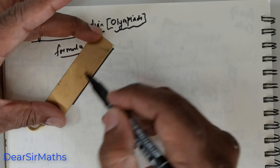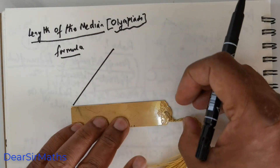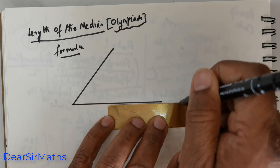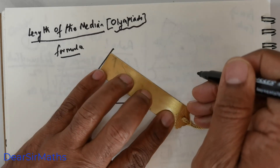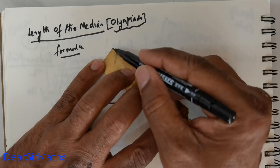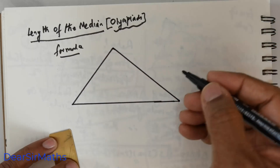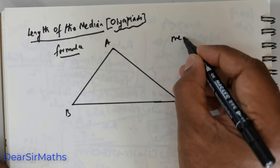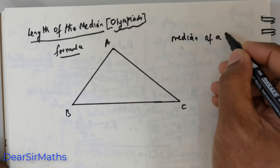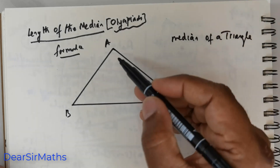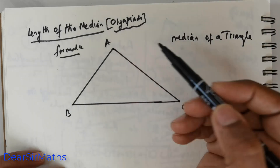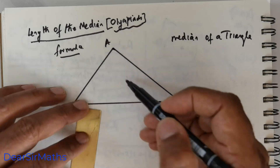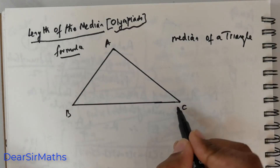So first let me draw the triangle. You have a triangle that is being drawn here. And then after this, let me name the sides as A, B, and C. Now you need to know what is the median of a triangle. It is nothing but the line that is drawn from the vertex — it can be from any vertex, you have A, B, C — a line that is drawn from the vertex to the midpoint of the opposite side.